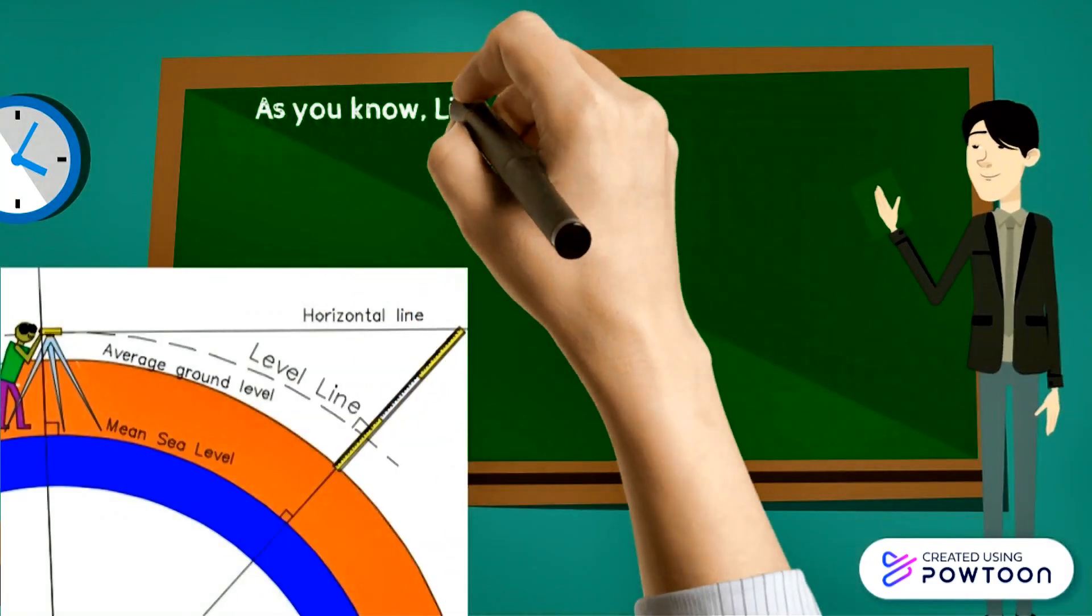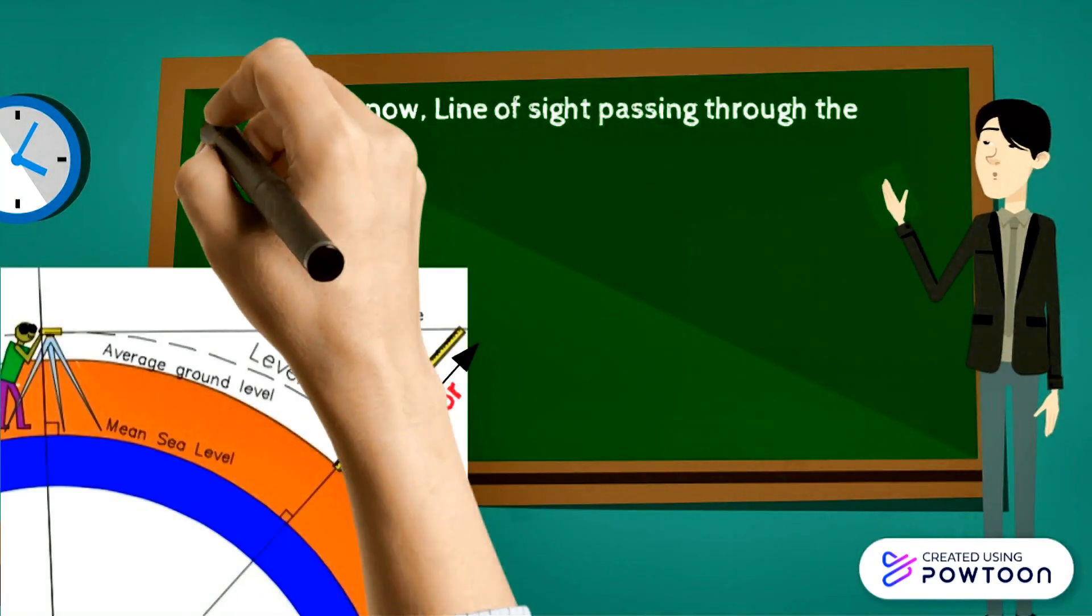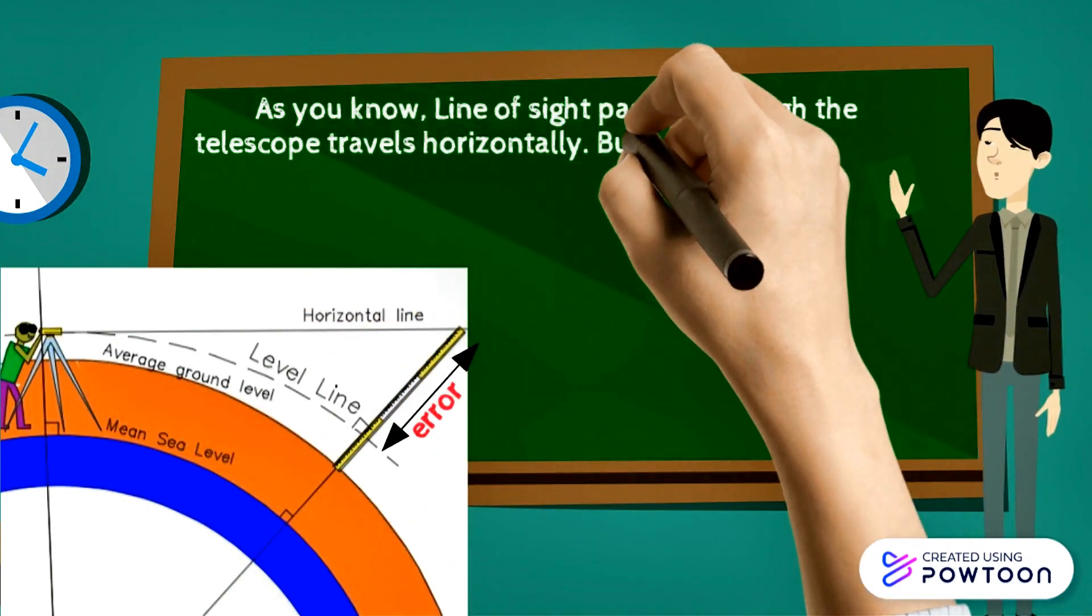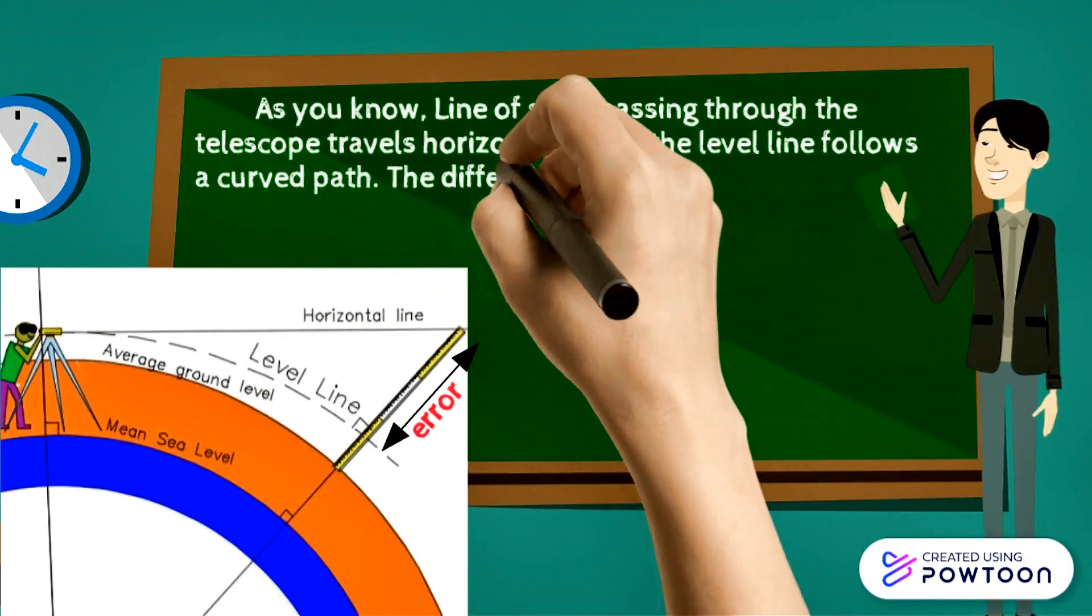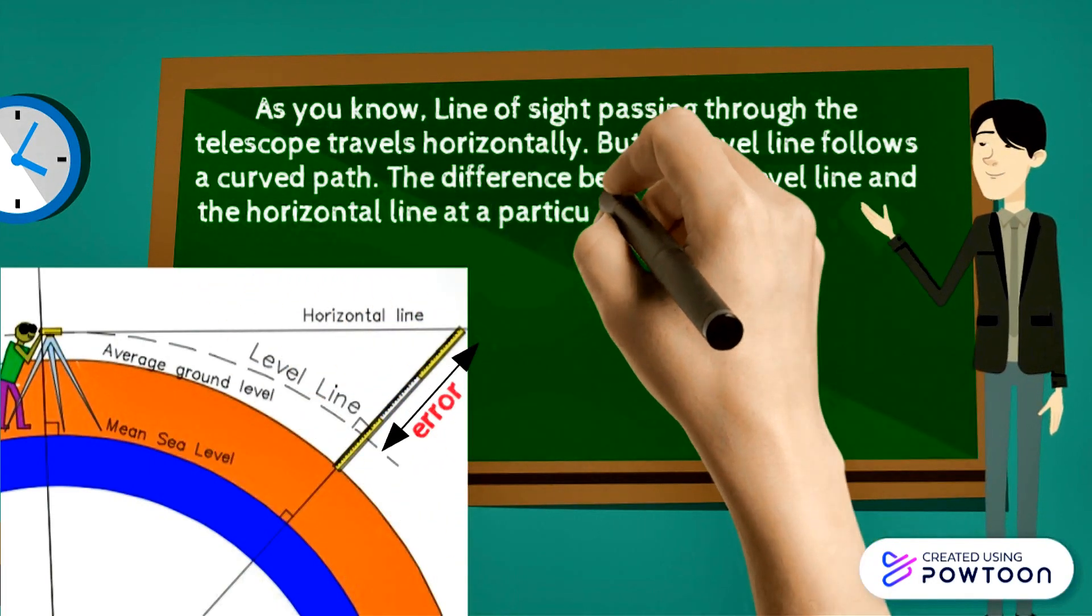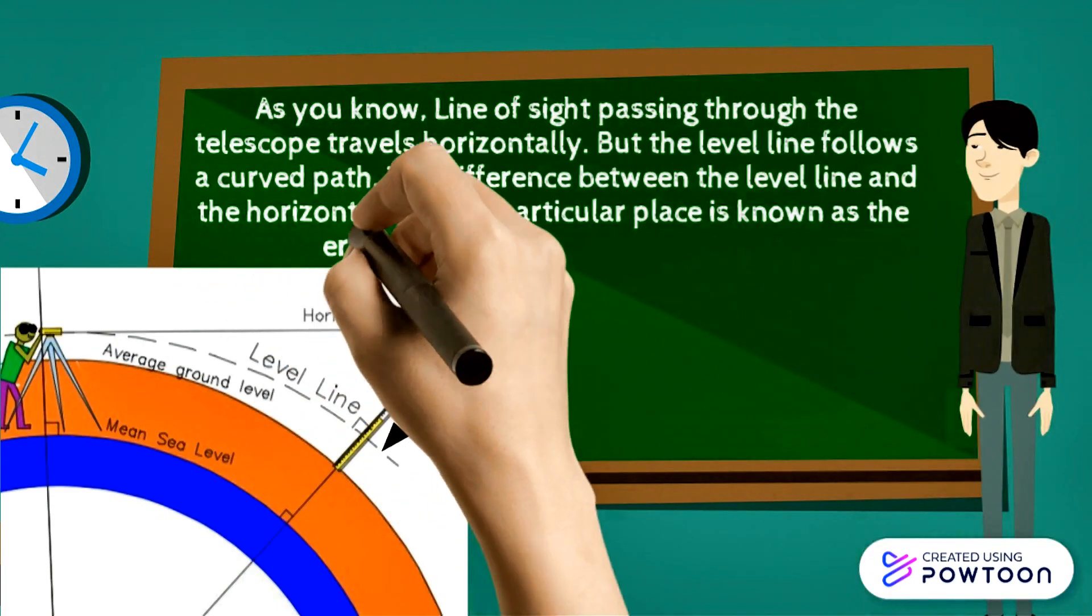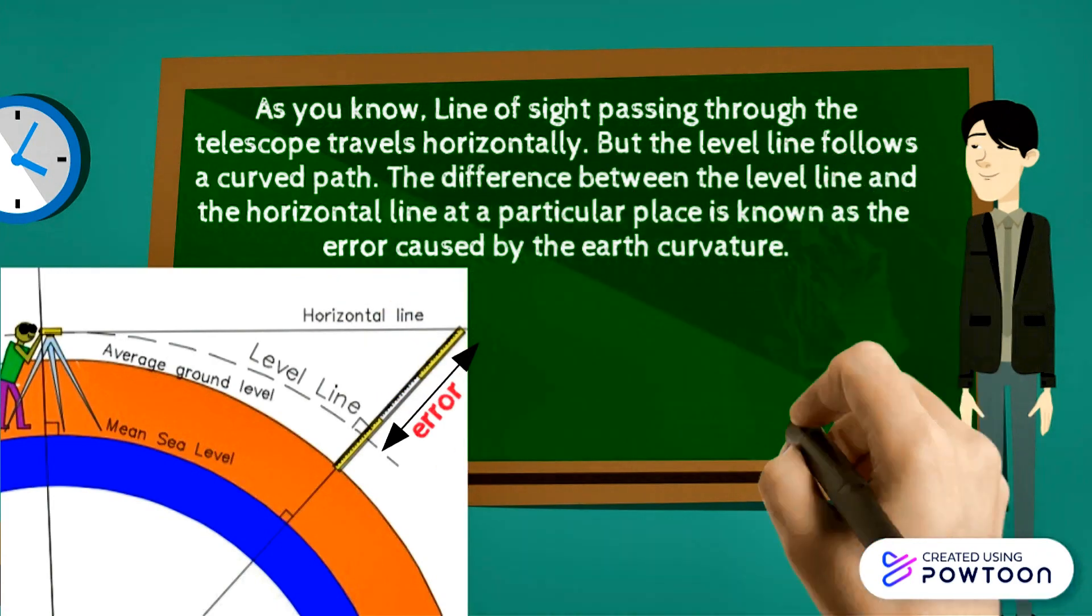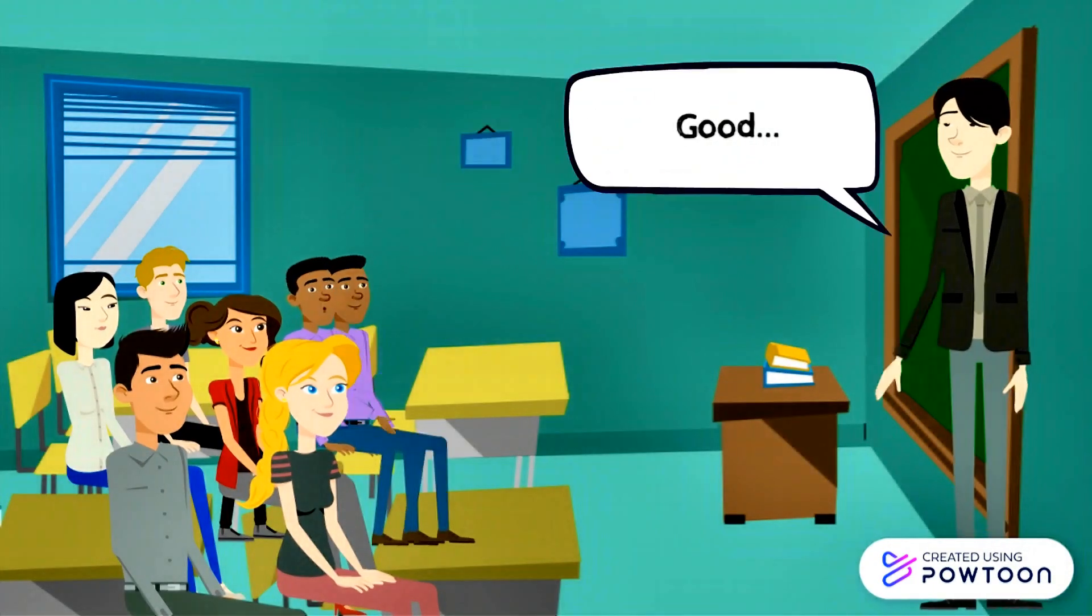As you know line of sight passing through the telescope travels horizontally. But the level line follows a curved path. The difference between the level line and the horizontal line at a particular place is known as the error caused by the earth curvature. Sir now I understood.